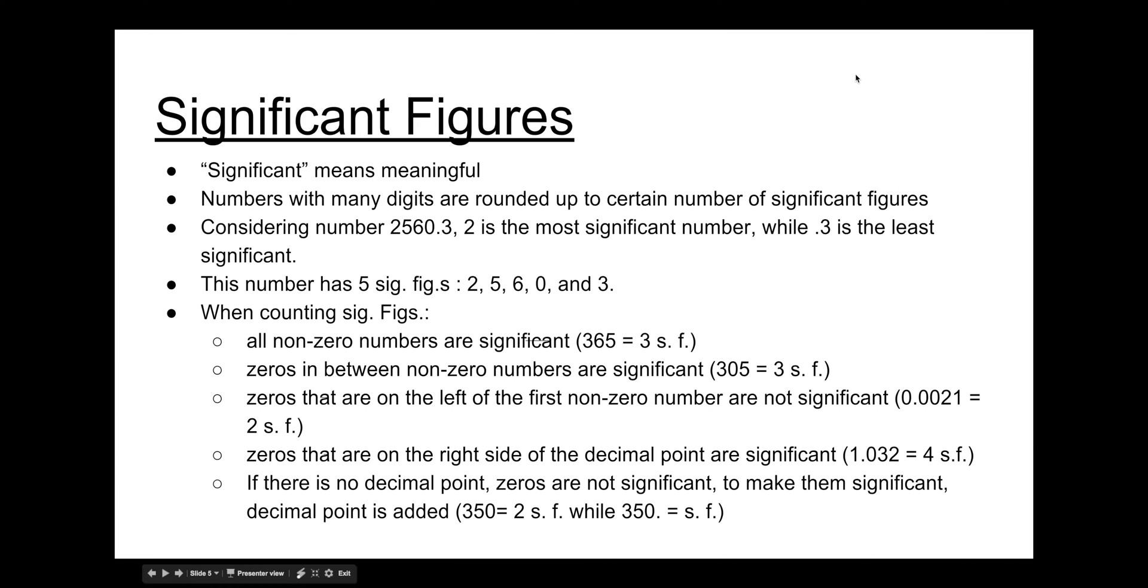There are five rules to counting significant figures. The first rule is that all non-zero numbers are significant. For example, in number 365, 3, 6 and 5 are all significant, hence there are three significant figures in this number.